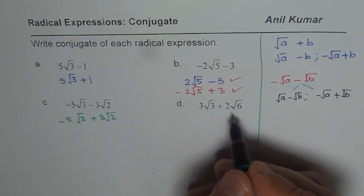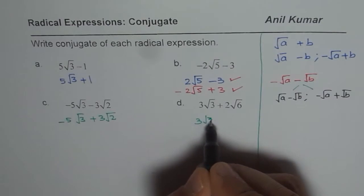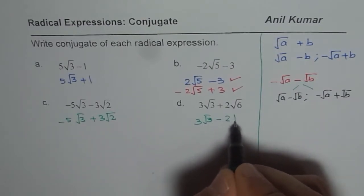In this case it is better to change the sign in the center. 3√3 - 2√6.